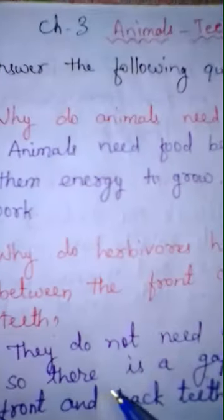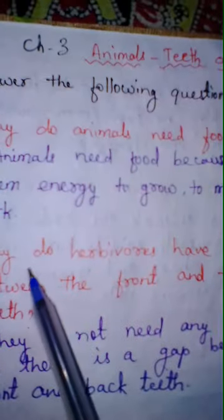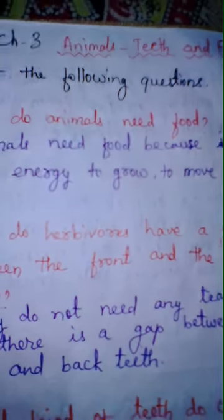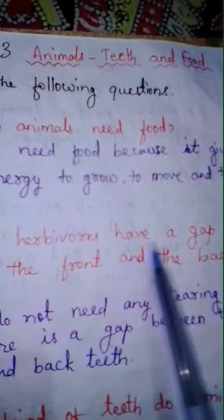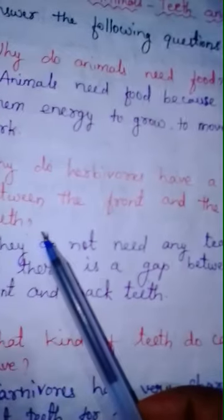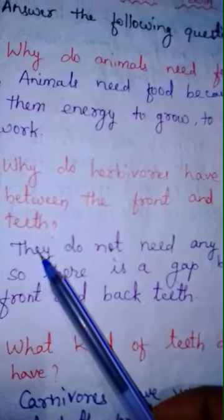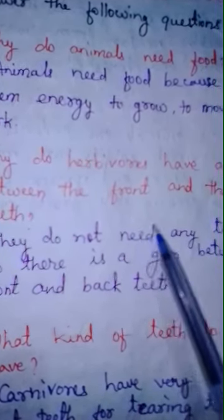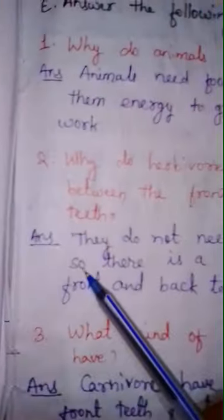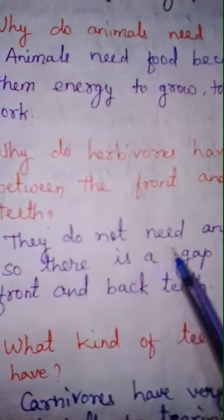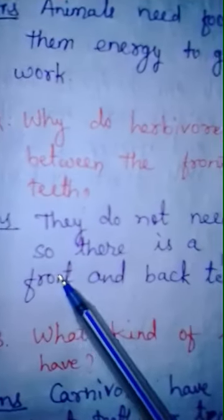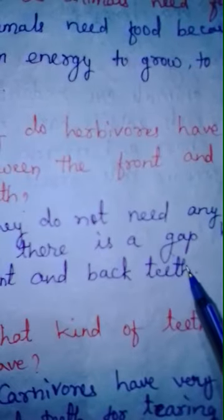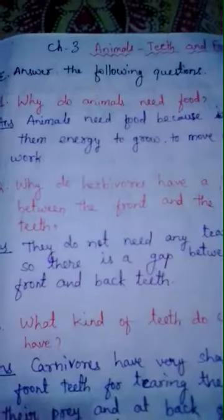Question number 2: Why do herbivores have a gap between the front and the back teeth? Your answer is: They do not need any tearing teeth, so there is a gap between their front and back teeth.